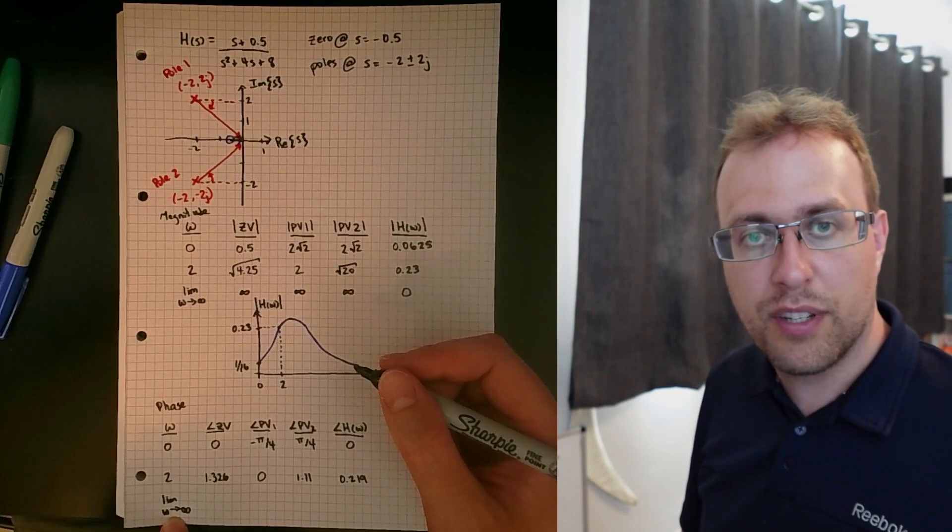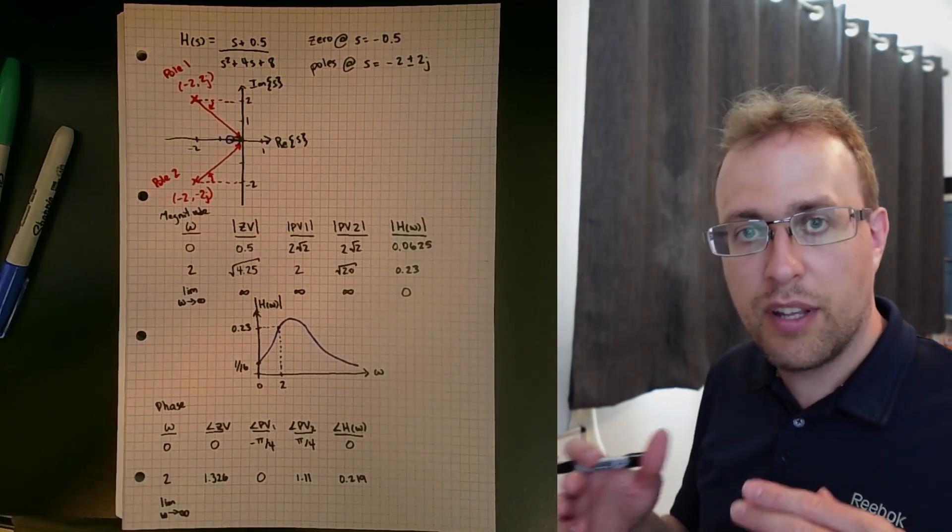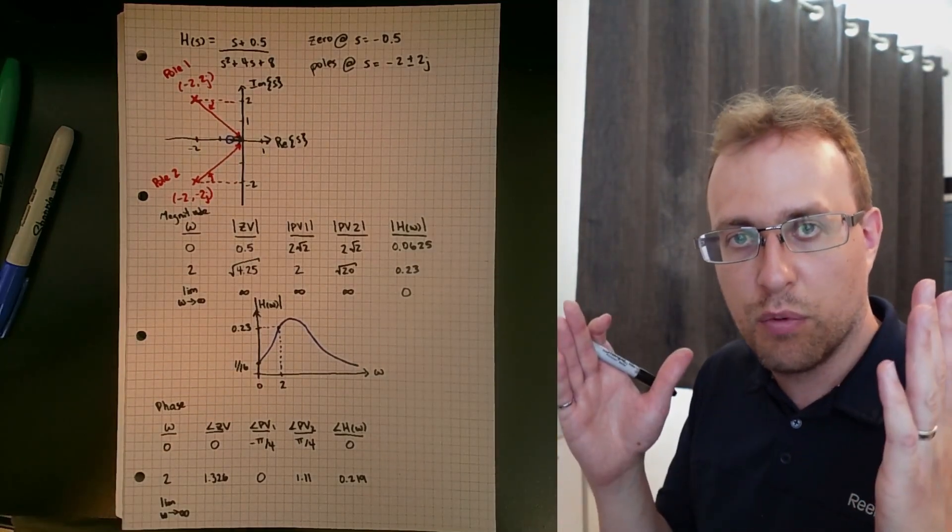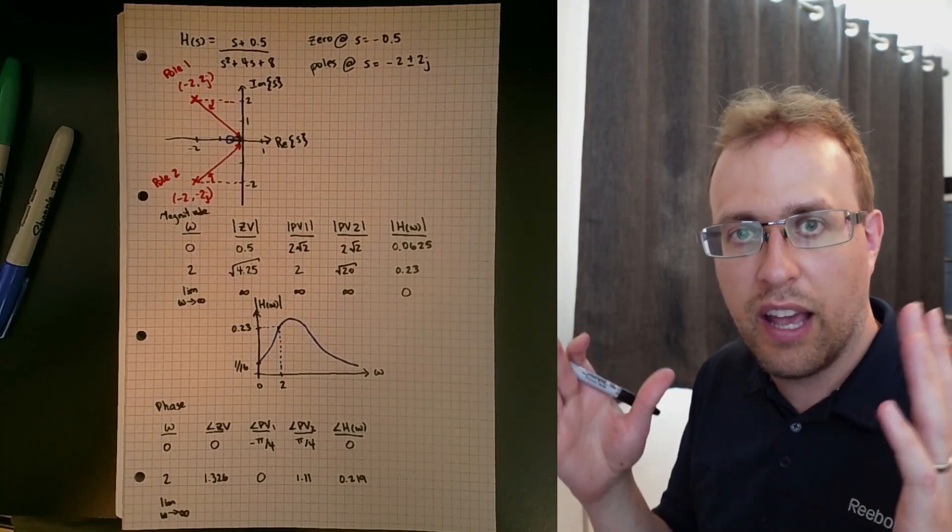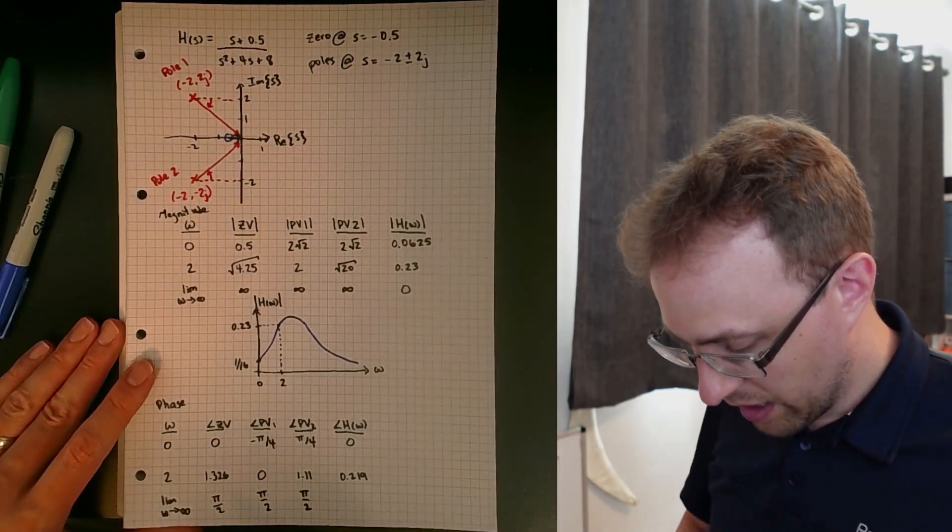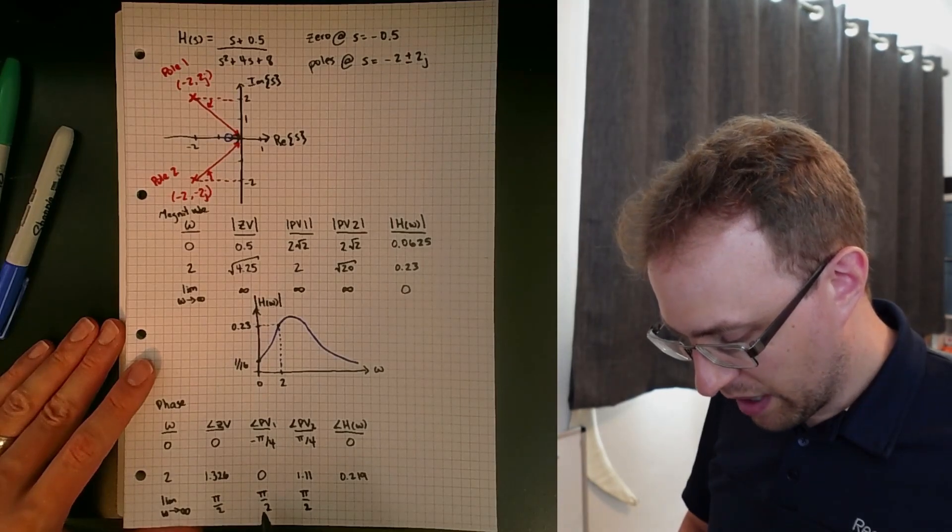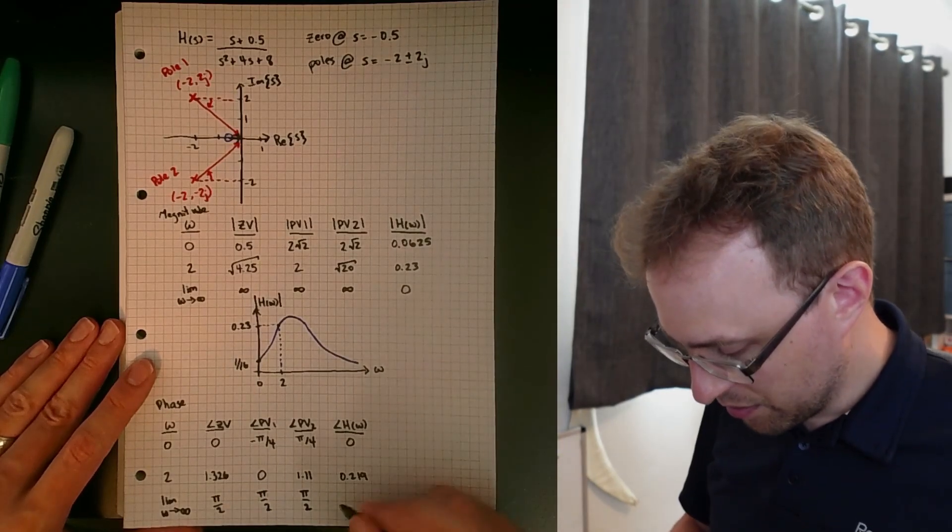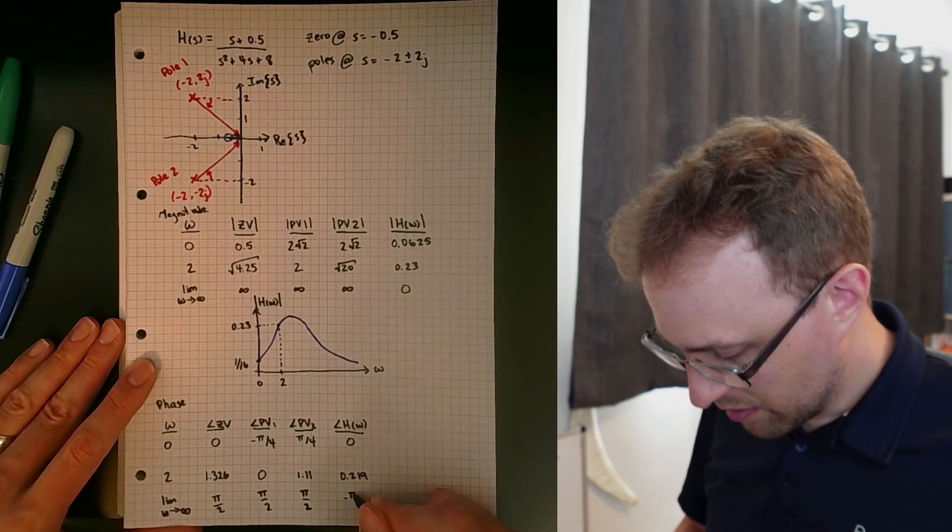For the limit as the frequency goes off to infinity, now these are cases where all the vectors are pointing upward and so essentially they all have a value of pi over 2. The overall phase then will be pi over 2 minus pi over 2 minus pi over 2, so that's going to be negative pi over 2.